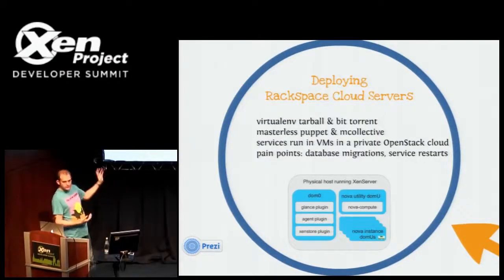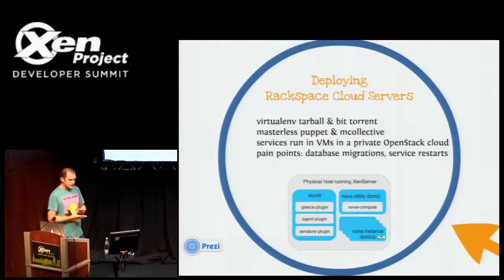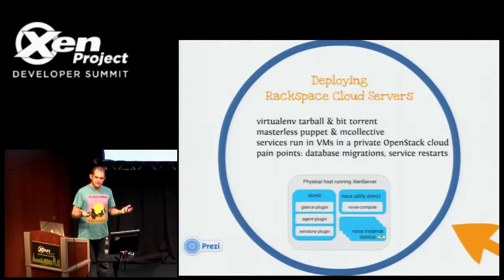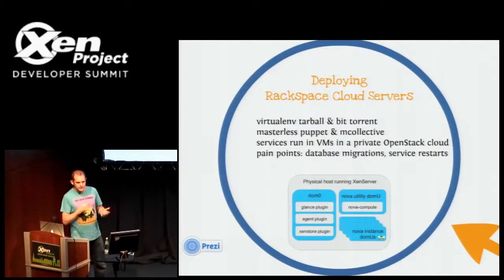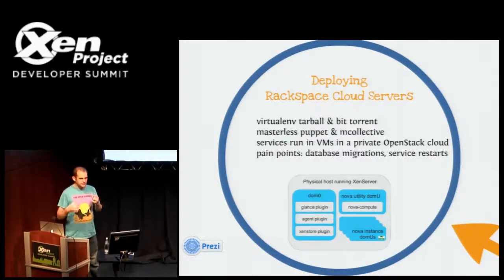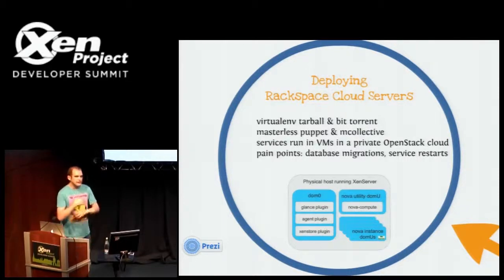Don't worry too much about the complicated diagram. Basically, we've got loads of servers that are hypervisors and we've got lots of control plane. At Rackspace we actually have our own private OpenStack cloud on XenServer that runs the control plane, so we have the ability to spin up VMs as we need to. We started off doing Puppet Master and Puppet pushing out configuration, but it just doesn't scale at the rate we were doing things.